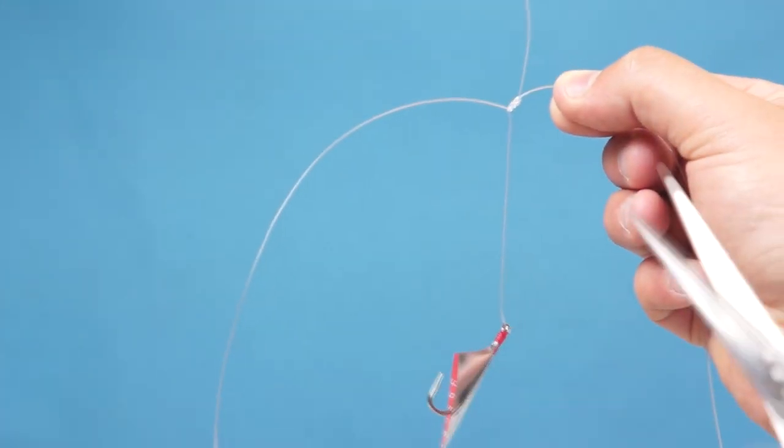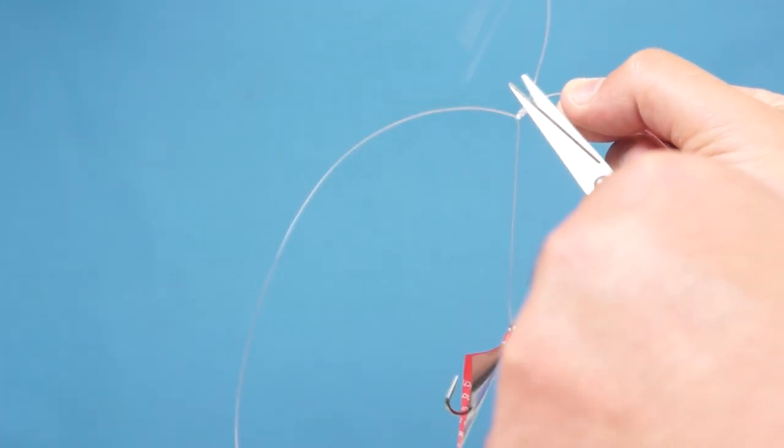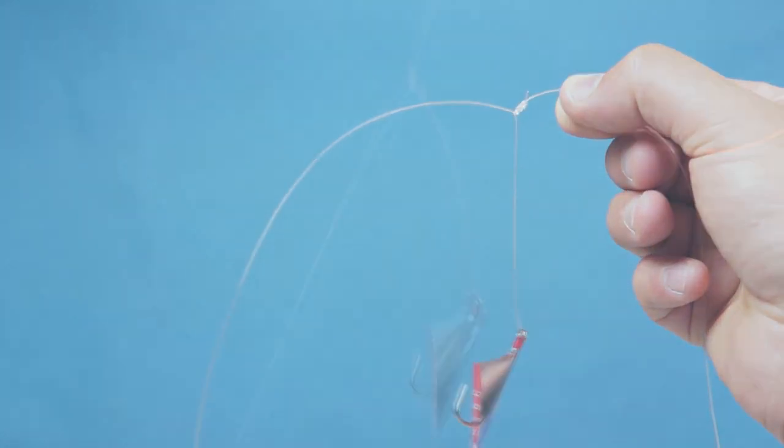It just remains to trim off the tag end and the first branch is made. To add the other 3 lures the process can be repeated on the other branch knots.